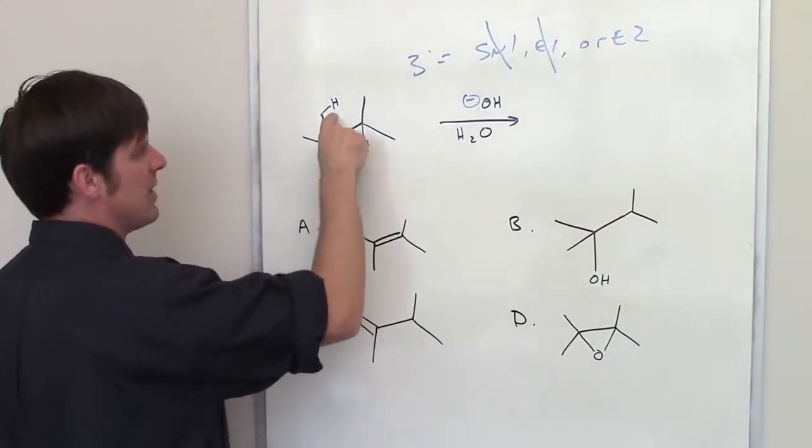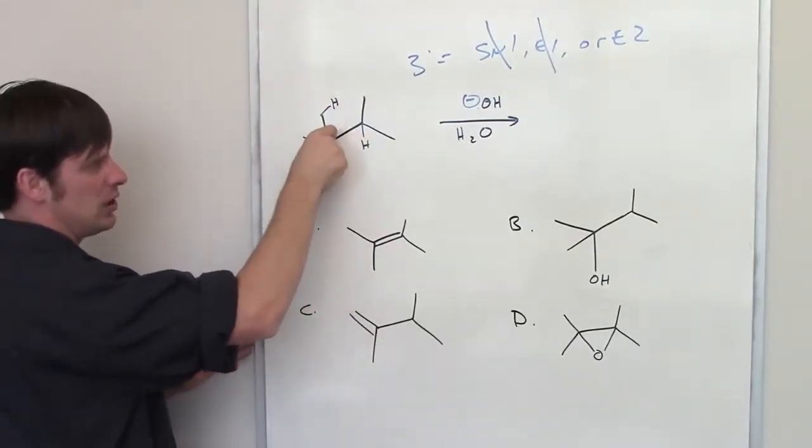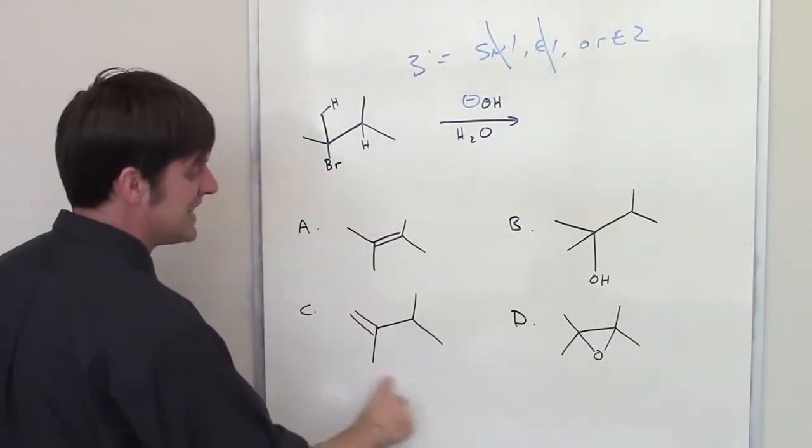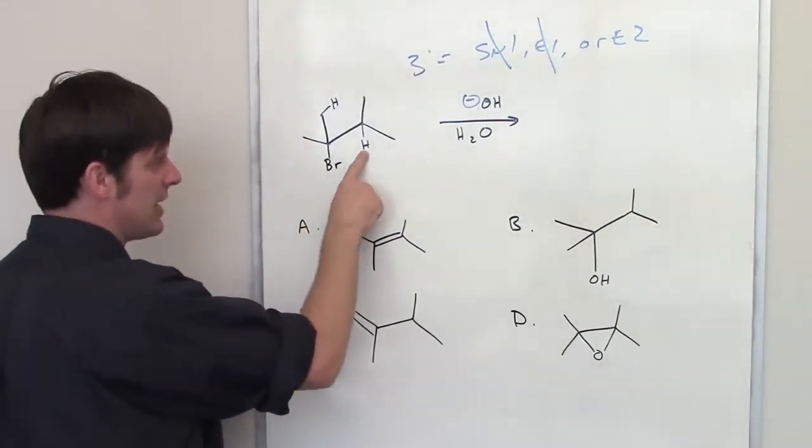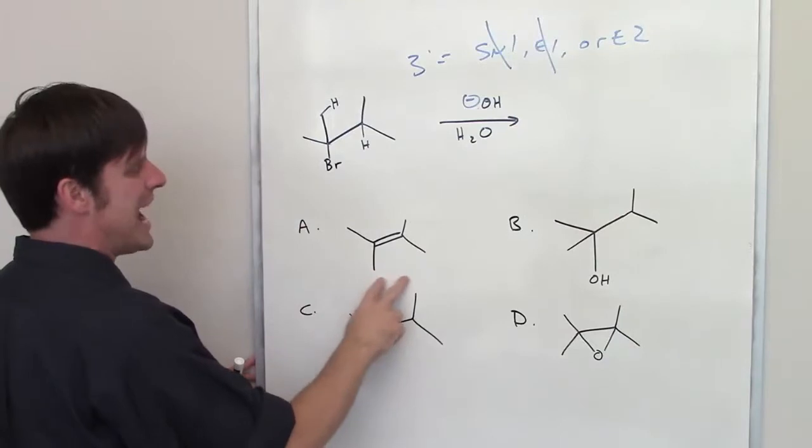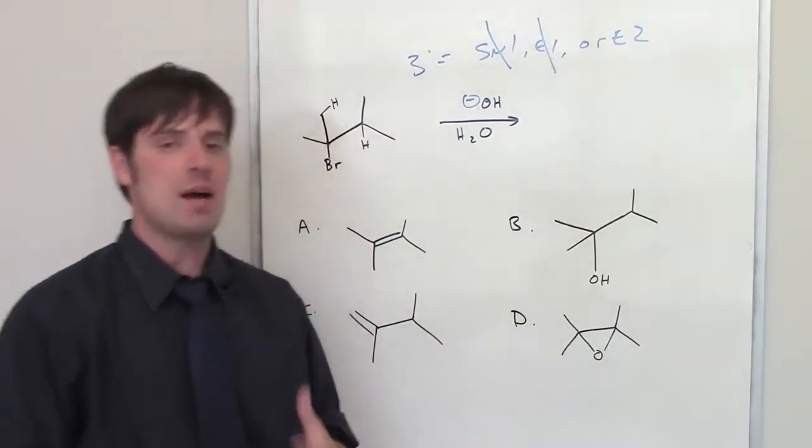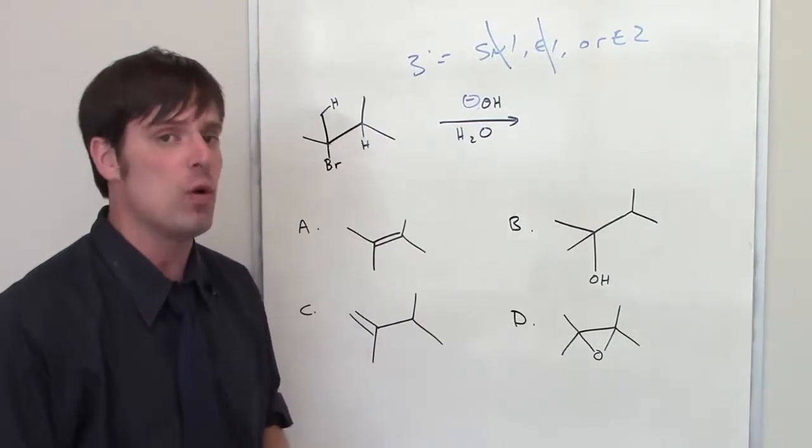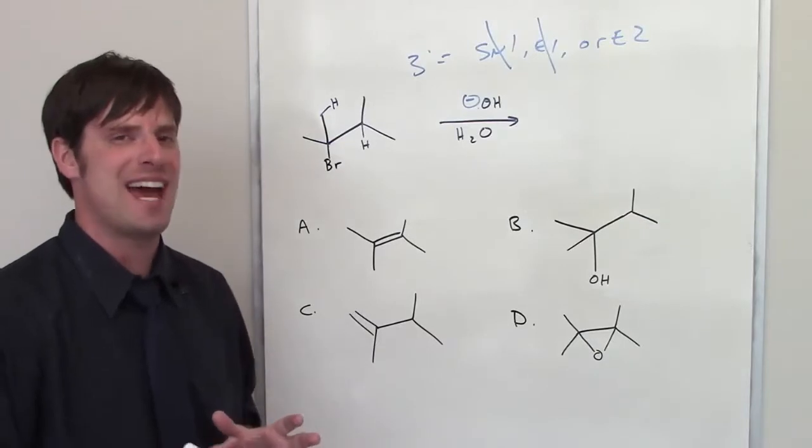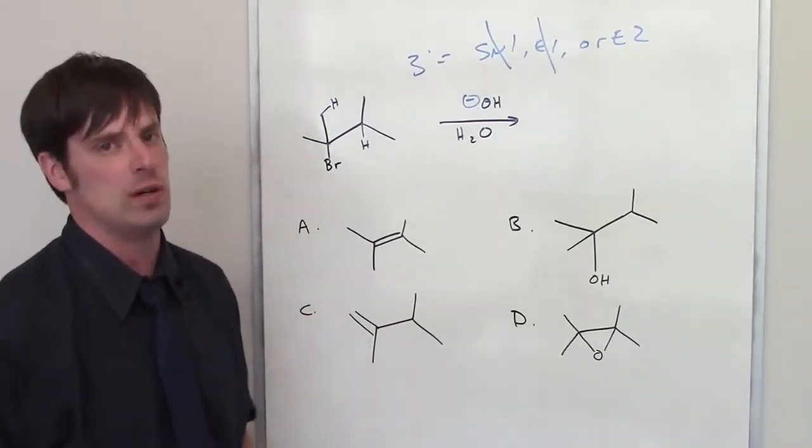Which of those products is going to be the major product? Well, if I were to grab this hydrogen down here, thrust these electrons down here like a door on a hinge, it would close to form a double bond, kick off this bromide, that would be answer C. If, in contrast, I grabbed this hydrogen, dump the electrons down and form a double bond here to kick off the bromide, that would be answer A. Which of those is going to be the correct answer? Well, as it turns out, both of them can and probably will form, but the more favorable product is the one that is more substituted, that is, has the more internal carbon-carbon double bond according to Zaitsev's rule.